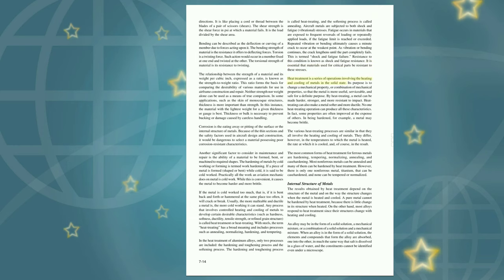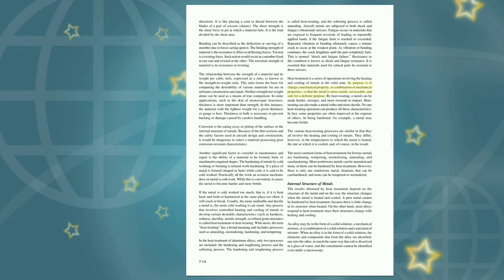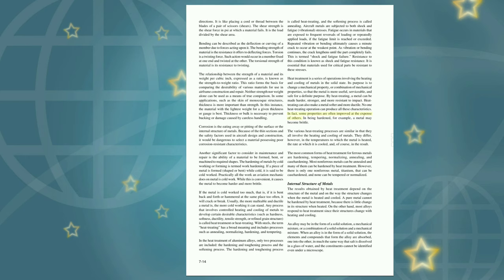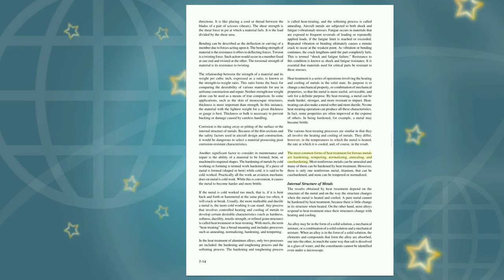Heat treatment is a series of operations involving the heating and cooling of metals in the solid state. Its purpose is to change a mechanical property so that the metal is more useful, serviceable, and safe for a definite purpose. By heat treating, a metal can be made harder, stronger, and more resistant to impact; it can also make a metal softer and more ductile. No one heat treating operation can produce all these characteristics; in being hardened, a metal may become brittle. The various heat treating processes differ in the temperatures to which the metal is heated, the rate at which it is cooled, and the result. The most common forms of heat treatment for ferrous metals are hardening, tempering, normalizing, annealing, and case hardening. Most non-ferrous metals can be annealed and many can be hardened by heat treatment; however, only titanium among non-ferrous metals can be case hardened, and none can be tempered or normalized.